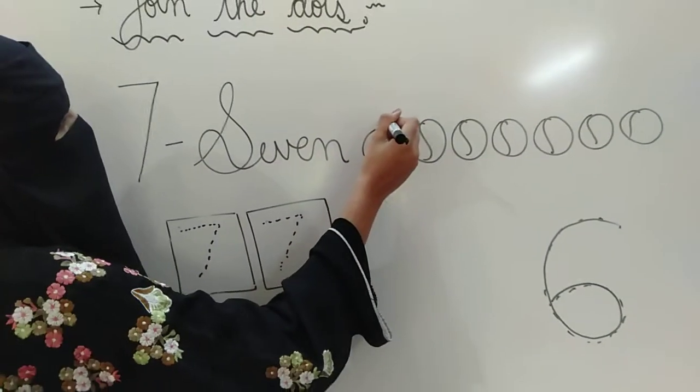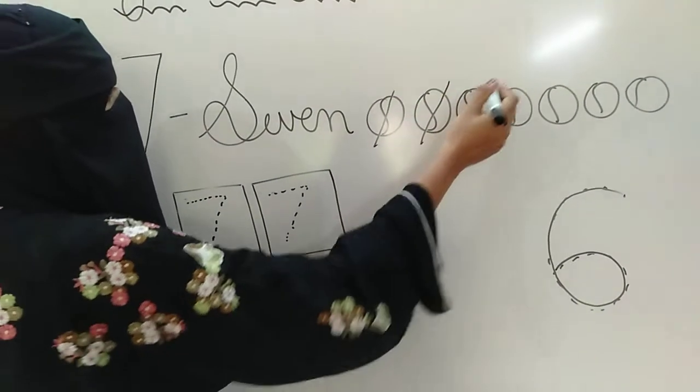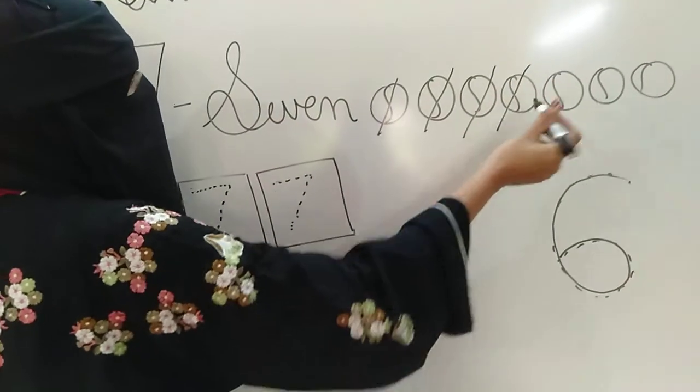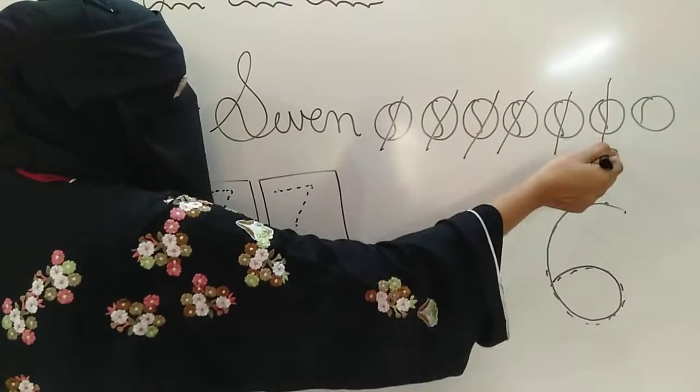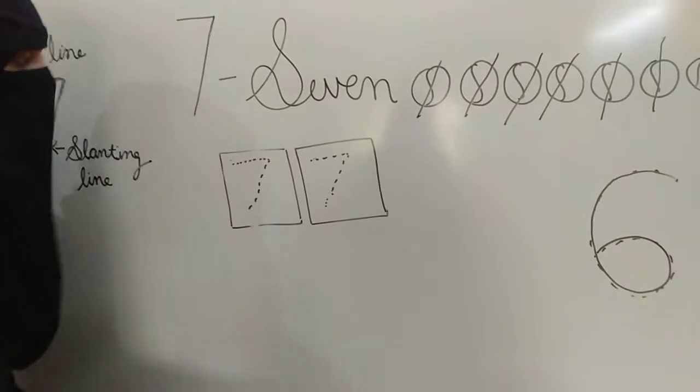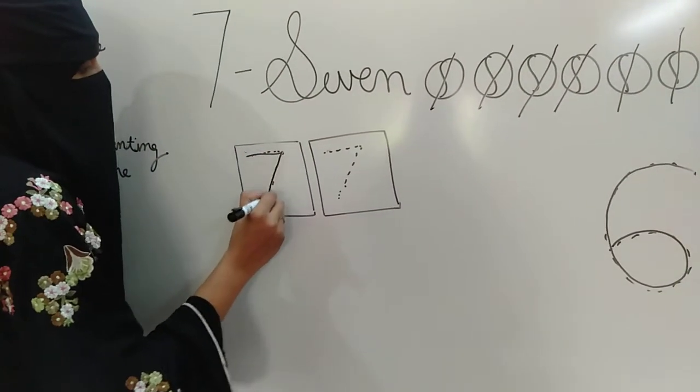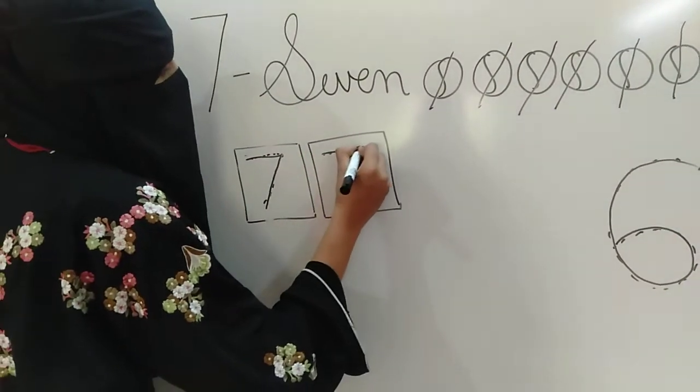Ab count karenge: 1, 2, 3, 4, 5, 6, 7. Slipping line, slanting line. Number 7.